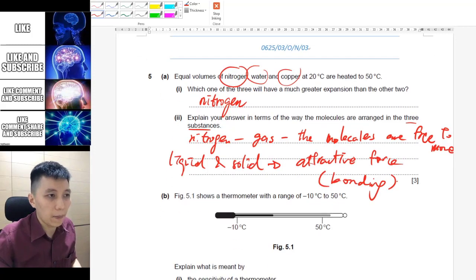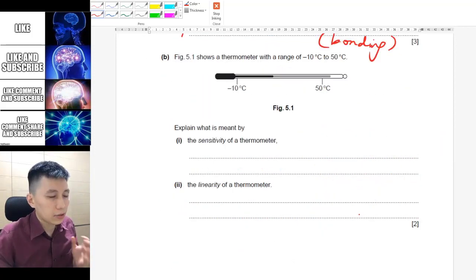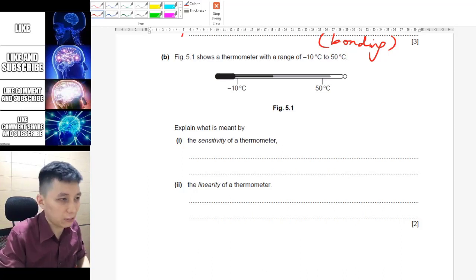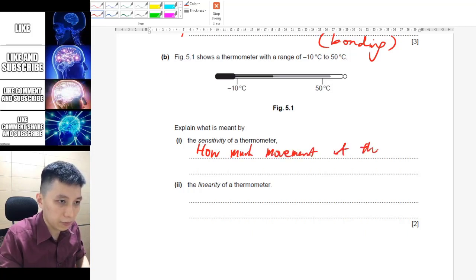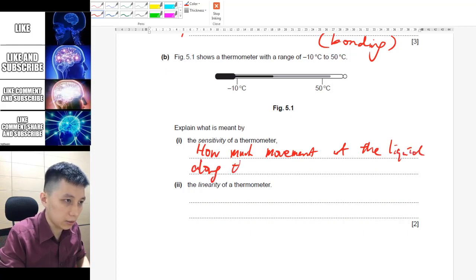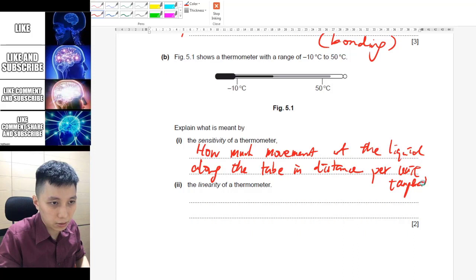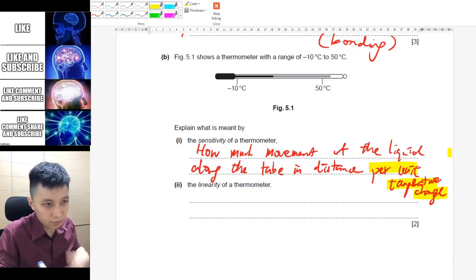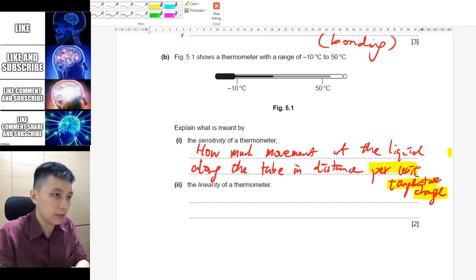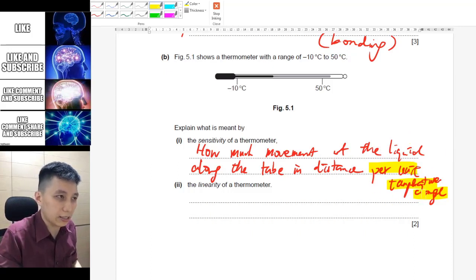Part two is just showing a thermometer and asking you more like definitions. So for sensitivity, you can phrase it as how much movement of the liquid along the tube in terms of distance per unit temperature change. Per unit temperature change means for each, for example, degree Celsius. Whenever you increase one degree Celsius, how much of the length will be increased. These were, I think, you should learn in science and try to apply them.